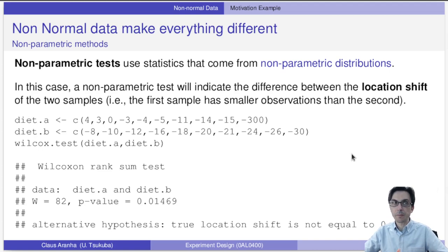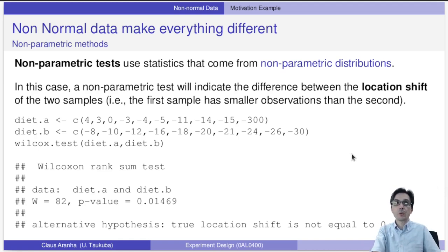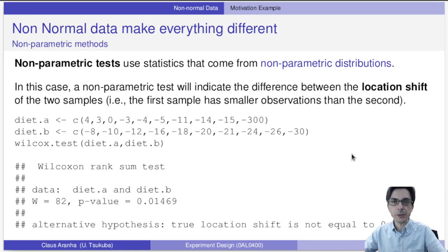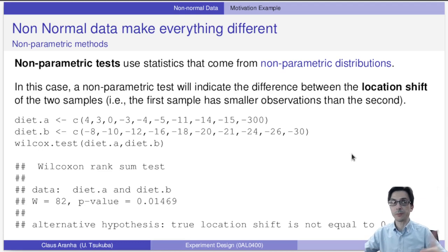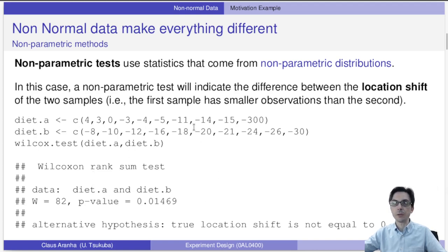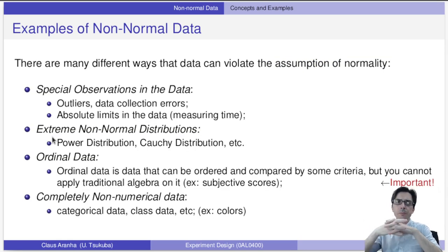The way to do that is using non-parametric tests. Non-parametric tests use statistics from non-parametric distributions and indicate the difference between the location shift of the two samples. Instead of comparing exact values, we compare the order of values between the two samples. For example, the Wilcoxon rank-sum test gives us a p-value of 0.01, saying the true location shift is not zero — one sample has values much lower than the other.